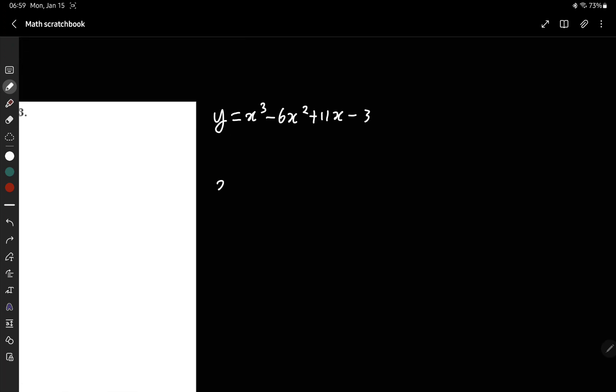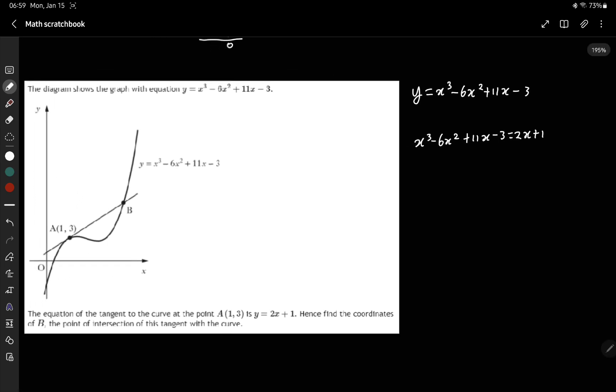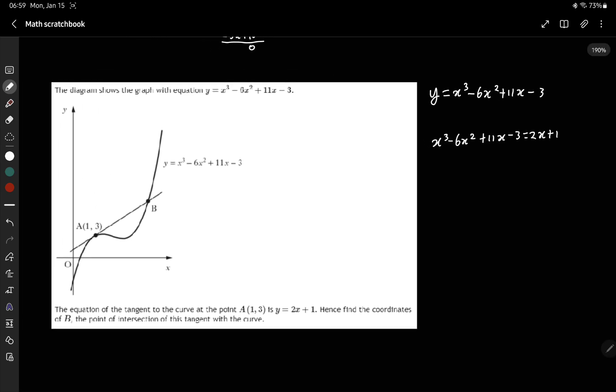So I'm going to write x cubed minus 6x squared plus 11x minus 3 equals 2x plus 1. Whenever you find the intersection, you always set the two equations equal to each other.